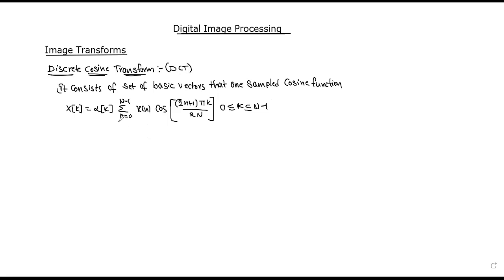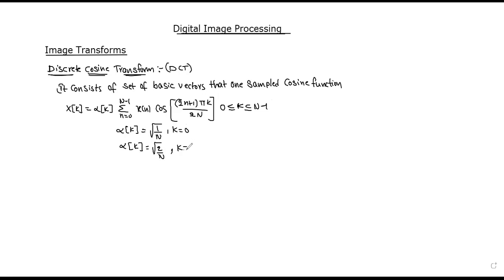And alpha(k) is equal to root over 2 by N, where k is not equal to zero.